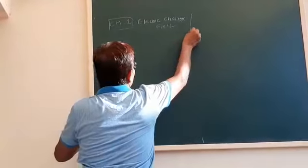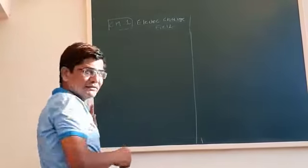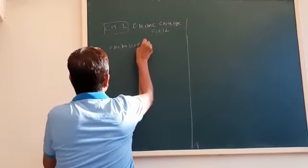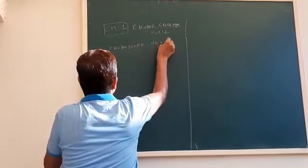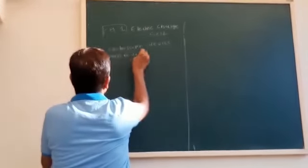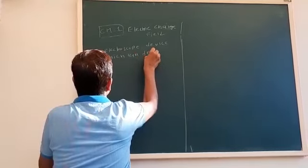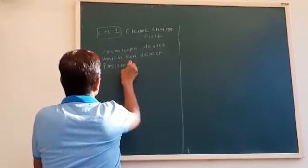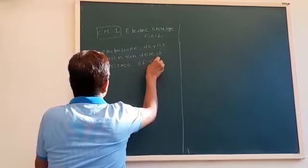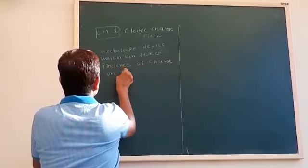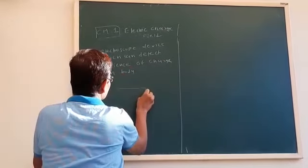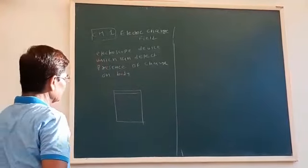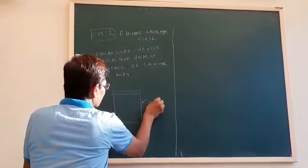The electroscope — I think you have seen it in a lower standard, around 6th or 7th standard. The electroscope is a device which can detect the presence of charge on a body. It consists of a glass box with a metallic rod connected with a gold foil inside.